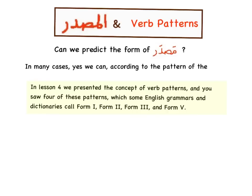In Lesson 4, we presented the concept of verb patterns — remember? You saw four of these patterns, which some English grammarians and dictionaries call Form 1, 2, 3, and 5.